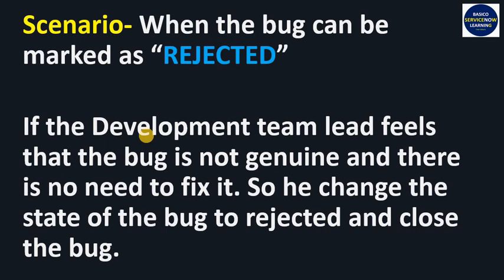Sometimes a software tester tests a particular functionality, finds what they believe is a bug, and logs it into the system. But when it is reviewed by the development team lead, they find the bug is not genuine. A discussion takes place between the testing team and the development team, and after discussion, if it is determined that this is not a genuine bug, then it is marked as Rejected.